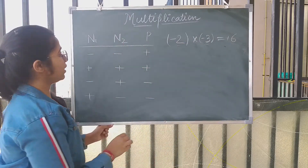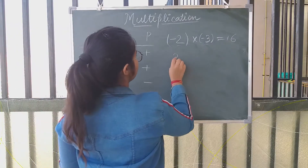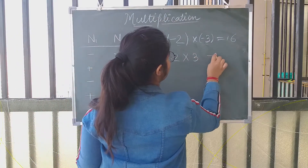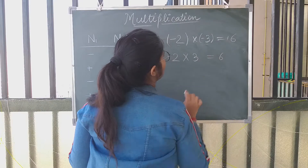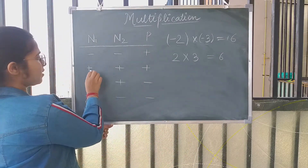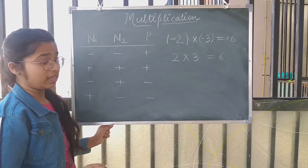And if both the numbers are of positive sign, that means if I write 2 into 3, the answer will be 6. So, plus into plus is plus.